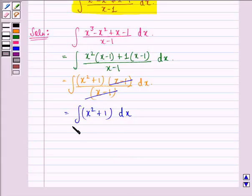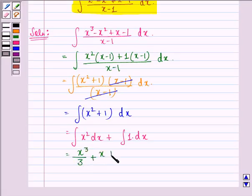Separating these two terms, we get the integral of x² dx plus the integral of 1 dx. This can be written as x³/3 + x + C.